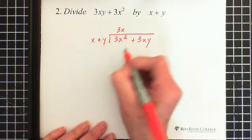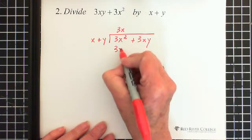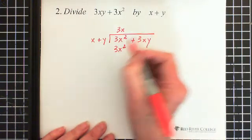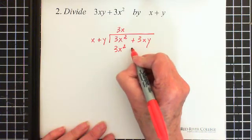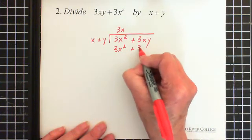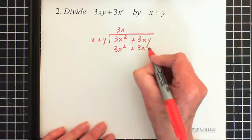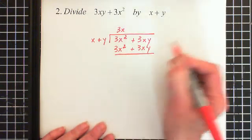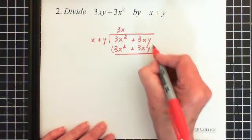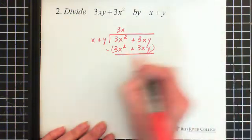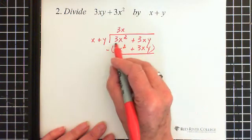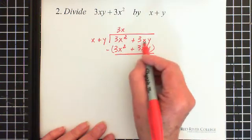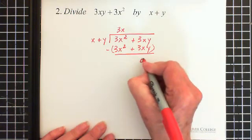3x times x is 3x squared. 3x times y is, and it's a plus y, is a plus 3xy. Now we are subtracting this entire piece, and it is exactly the same as what we have up here. So 3x squared, or plus 3xy minus this piece is going to give us 0.